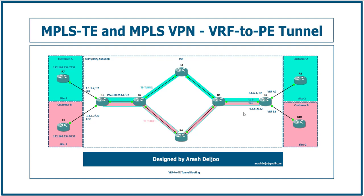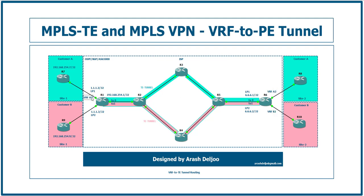In R1 we need two loopback IP addresses, one per VRF. On Router 6 we also need two IP addresses: 6.6.6.1 for Loopback 1 and 6.6.6.2 for Loopback 2. I will configure two TE tunnels — tunnel 0 and tunnel 1 — on both R1 and R6. Everything is similar to the P2P tunnel configuration, but we only need to change the next-hop. In R1 we use VRF A1 and VRF B1; in R6 we have VRF A2 and VRF B2.